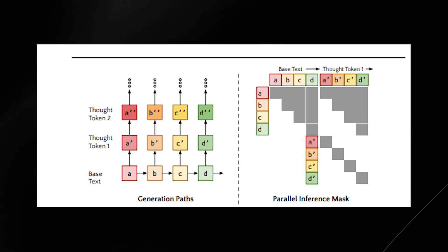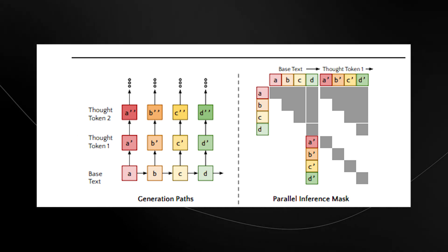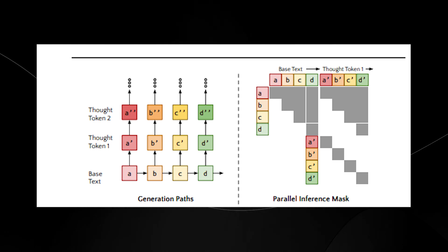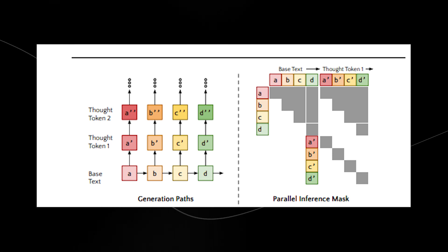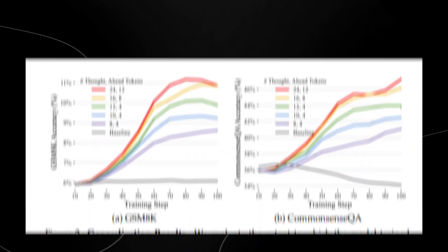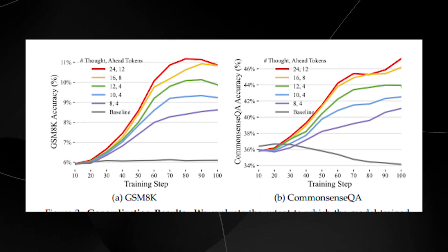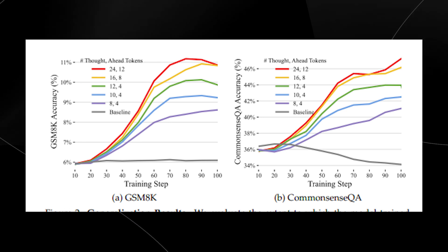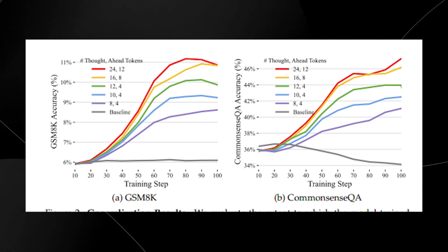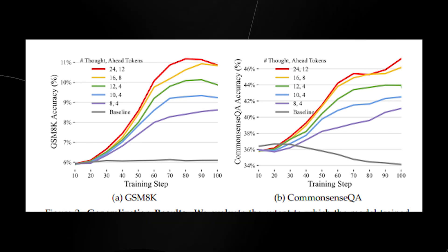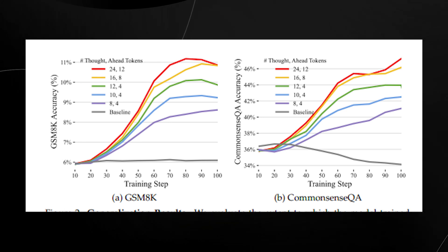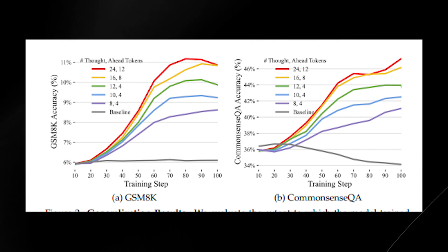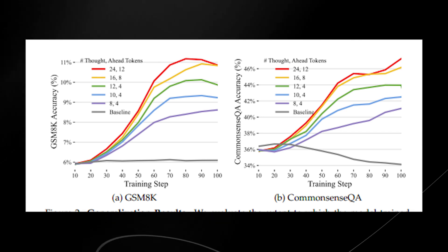The researchers tested QuietStar on two challenging question-answering benchmarks: CommonsenseQA and GSM8K math word problems. They found that pre-training a model with QuietStar on a large web corpus led to strong improvements on both tasks compared to a regular language model, without needing any task-specific fine-tuning.